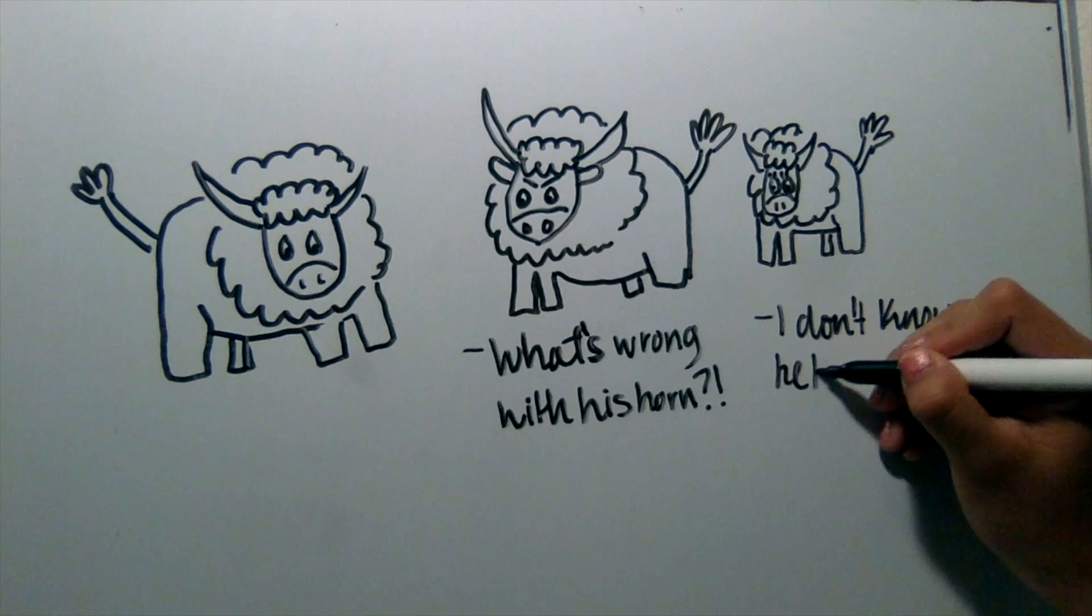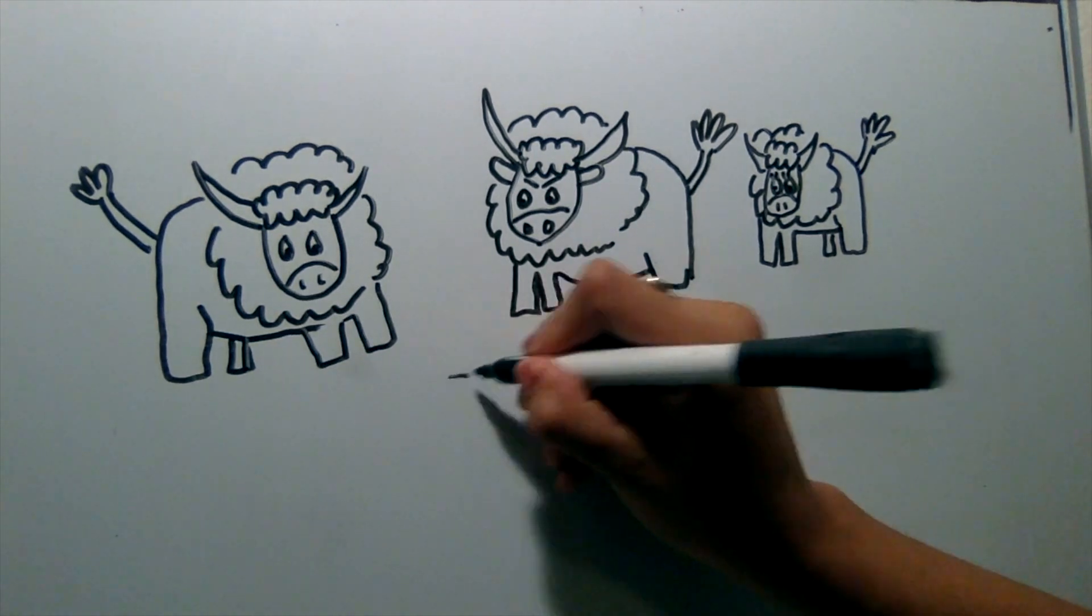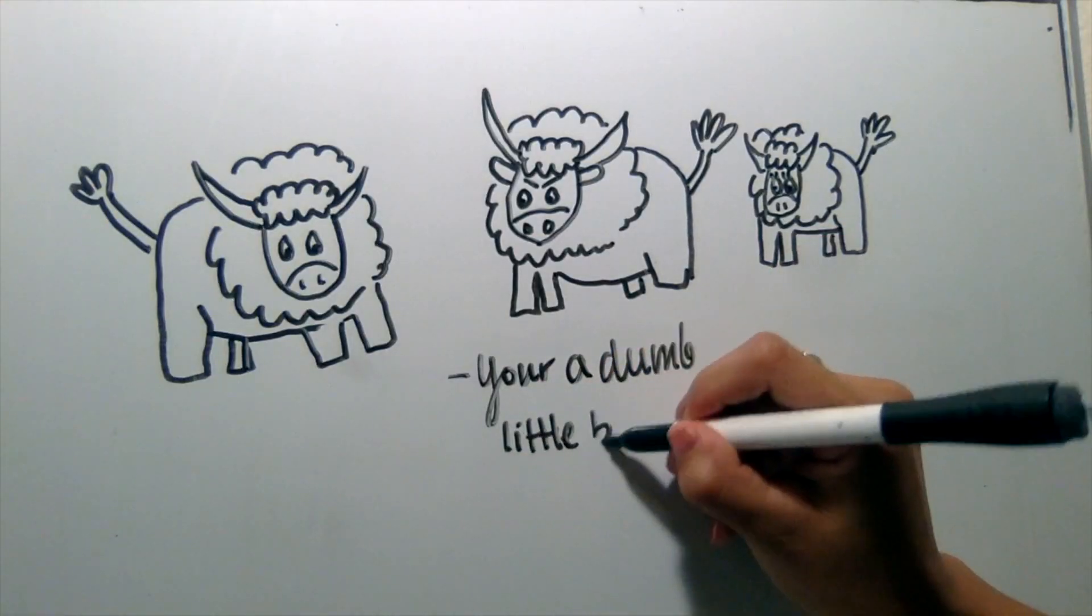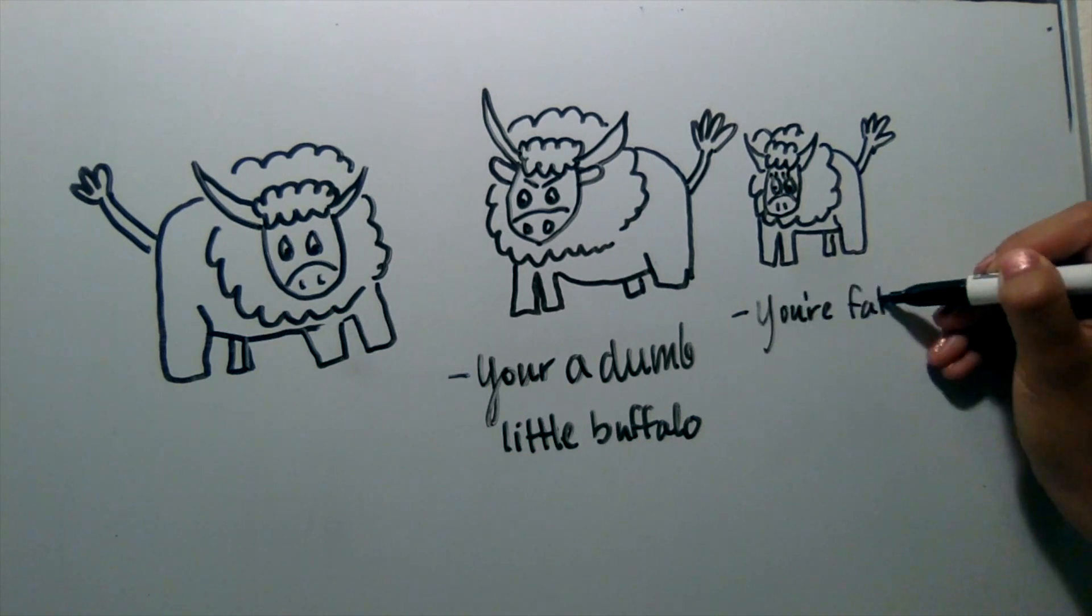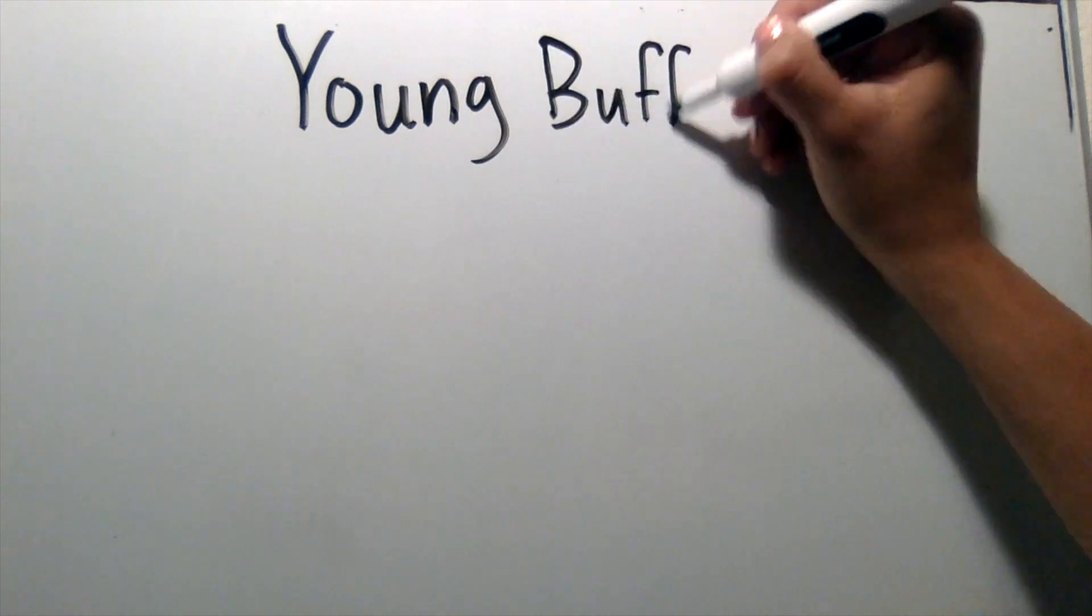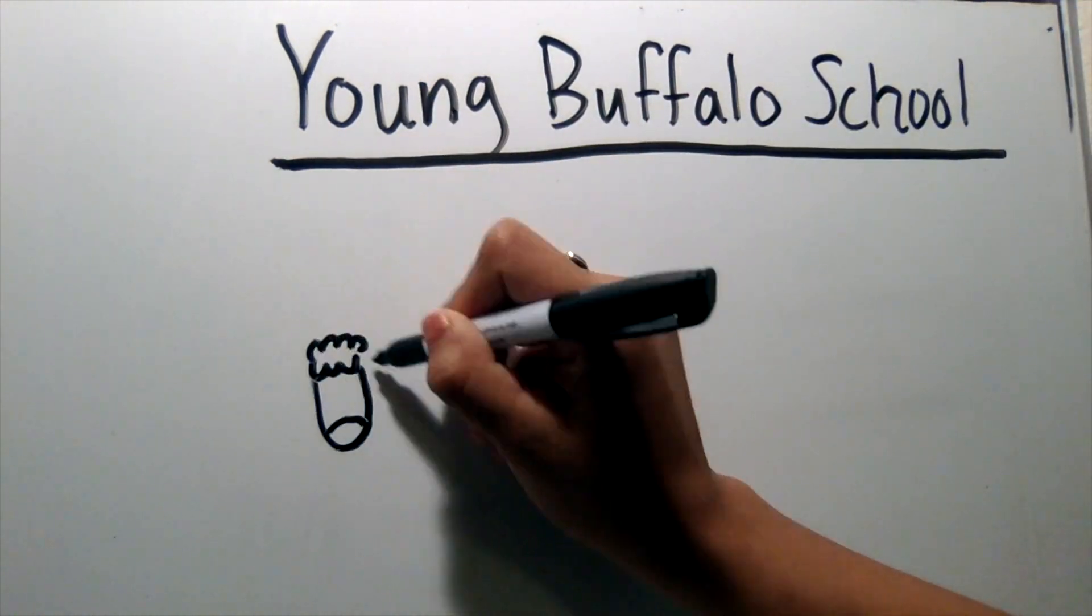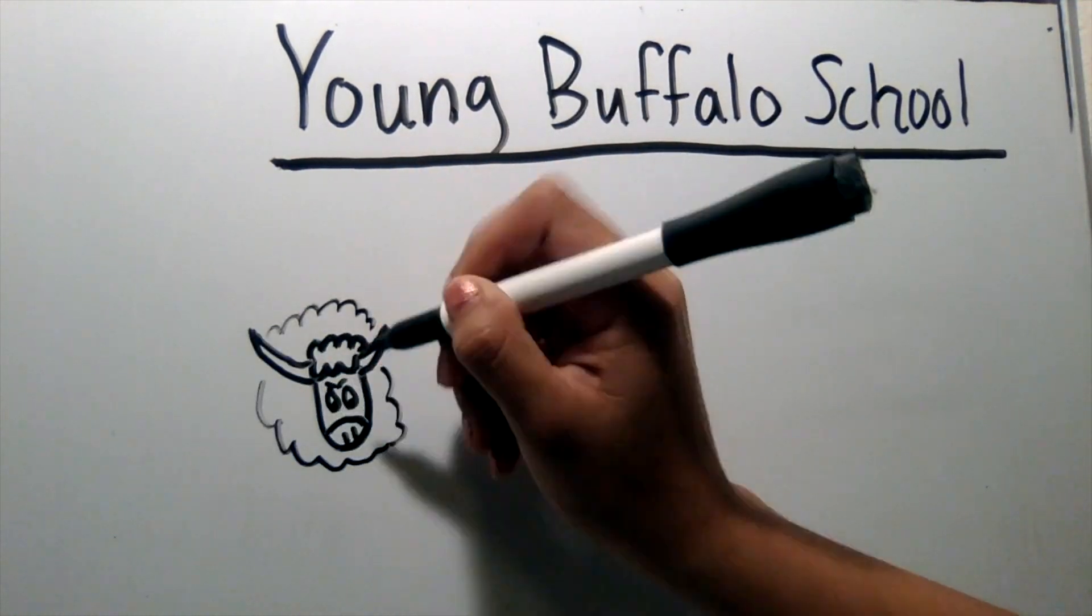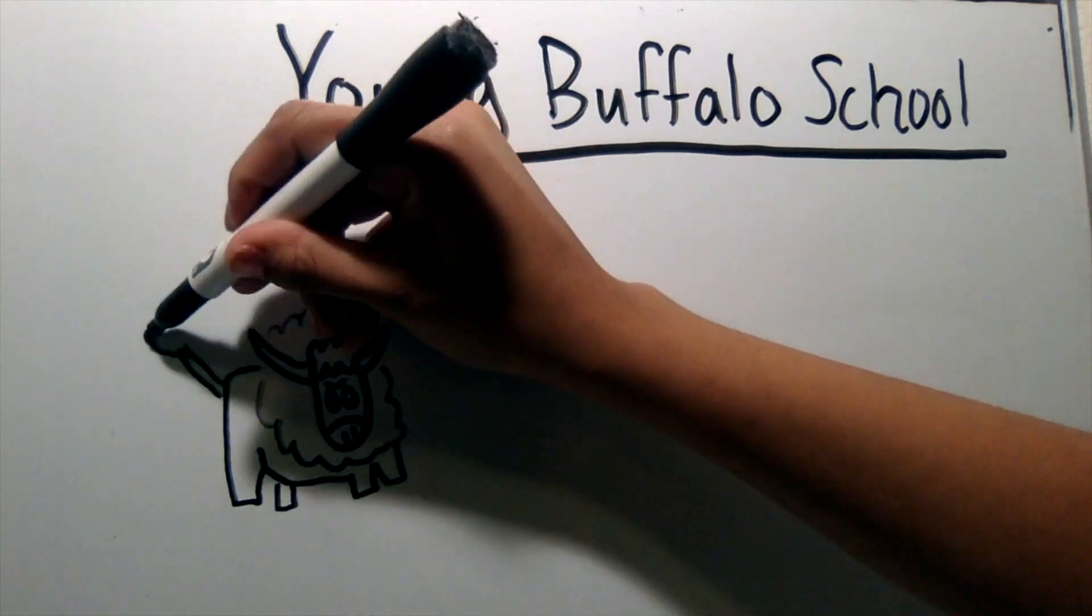They began to buffalo Mark for having asymmetrical horns and were not very nice to him. And so, they often made him cry. Mark was sent off to young buffalo school where he met other buffalo. Even though he had grown, his horns still had not.